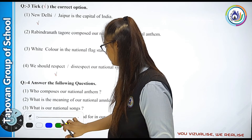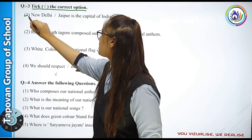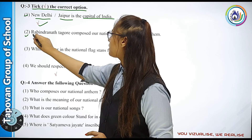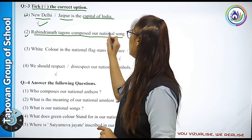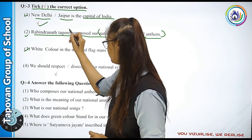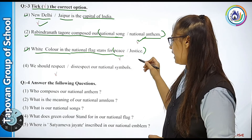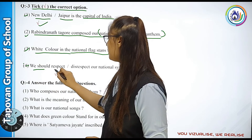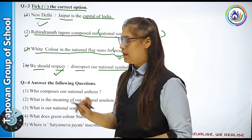Next: Tick the correct option. First — New Delhi or Jaipur is the capital of India? Answer: New Delhi. Second — Rabindranath Tagore composed our national song or national anthem? Answer: National Anthem. Third — White color in the national flag stands for peace or justice? Answer: Peace. Fourth — We should respect or disrespect our national symbols? Answer: Respect.